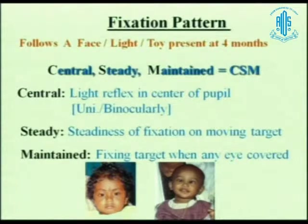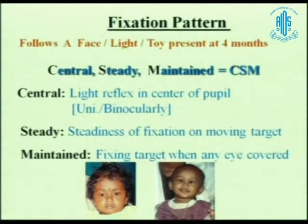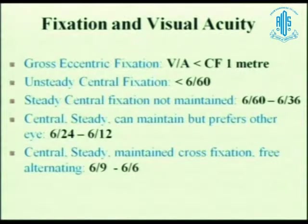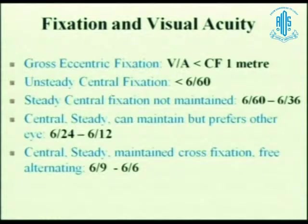Another way of finding out visual acuity is the fixation pattern. The CSM method is normally followed — three things: Central (whether fixation is central or not), Steady (whether it is steady or not), and Maintained (whether it is maintained or not). The light reflex in the center of the pupil tells you about centrality, monocularly and binocularly. Steadiness is assessed on a moving target, and whether it is maintained when you cover the fixing eye. This is a classification of how to interpret visual acuity in Snellen's terms from the CSM method — these are very gross estimates with ranges. Unsteady central fixation corresponds to less than 6/60 (anywhere between 2/60 to 6/60). Steady central but not maintained corresponds to 6/60 to 6/36 or 6/24. Central steady maintained but prefers the other eye could be 6/12 to 6/24.